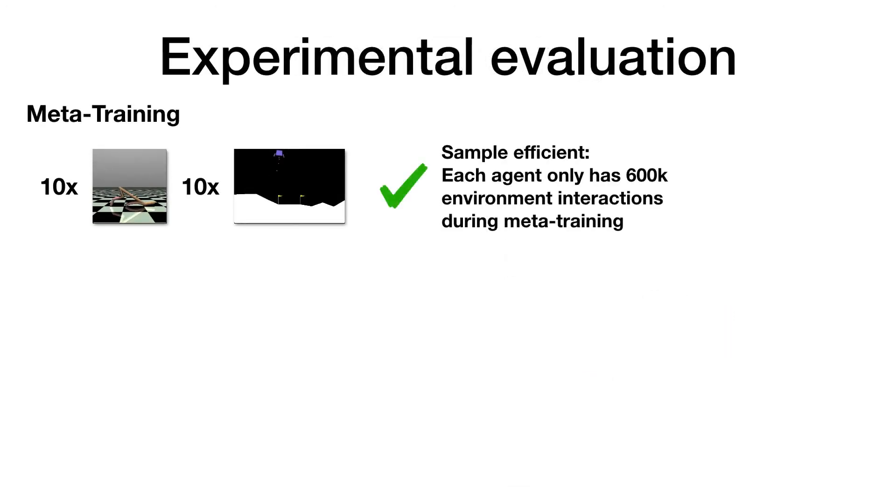In the following experimental evaluation, we have meta-trained with a population of 20 agents, 10 of them acting in half-cheetah and 10 in lunar lander. Due to the sample efficiency of meta-training, we only use 600,000 environment interactions for each agent.